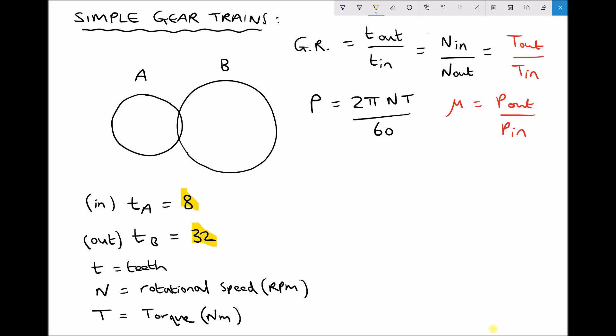We've also specified here that the input is gear A and the output from the gearbox is gear B. So basically what's happening here is we're turning gear A in a clockwise direction, and as a result gear B is turning in an anti-clockwise direction.